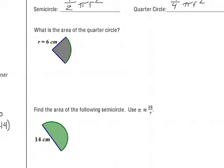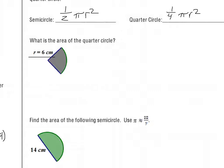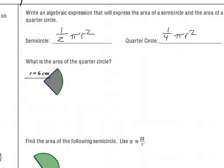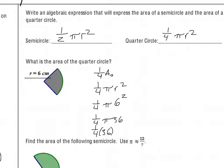This problem asks: what is the area of a quarter circle with a radius of 6 centimeters? We have one-fourth of the total circle area, so one-fourth of π times radius squared — one-fourth of π times 6 squared. Remember, 6 squared is not 6 times 2; it's 6 times 6, which is 36. Rearranging: one-fourth times 36 times π equals 9π.